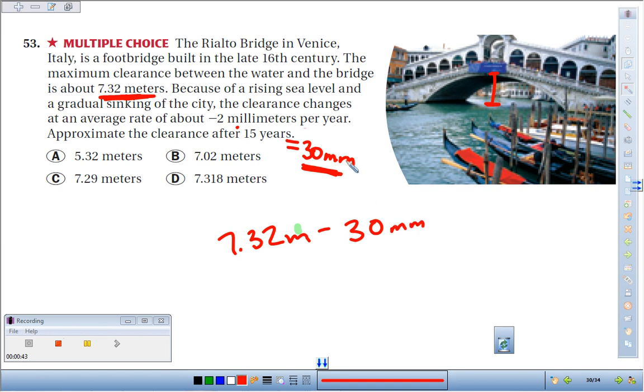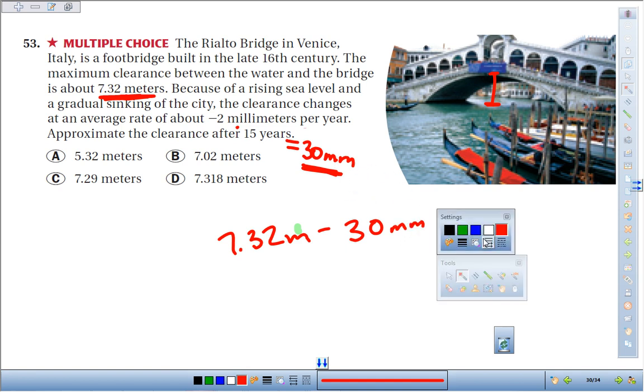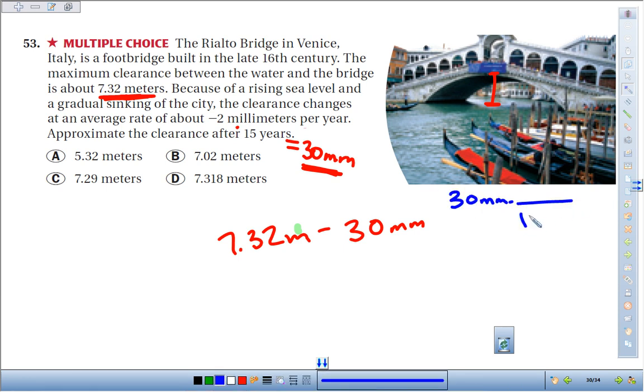So if we take 7.32 meters minus 30 millimeters, let's convert millimeters into meters so we can continue with the problem. Okay, 30 millimeters times a conversion factor, there's 1,000 millimeters in one meter. If we take 30 times 1, divide by 1,000, the millimeter label is canceled.